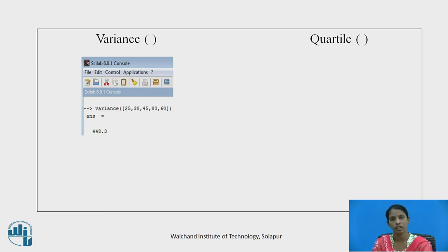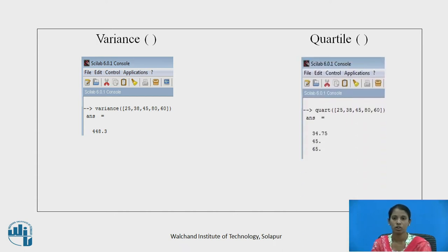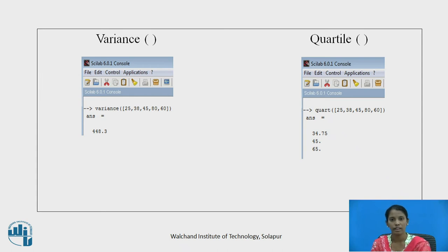Similarly, the quartile of a vector can also be found out using the Scilab statistical function QUART. For the vector having elements 25, 38, 45, 80, and 60, the quartile values are 34.75, 45, and 65.